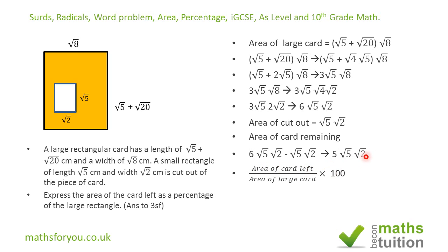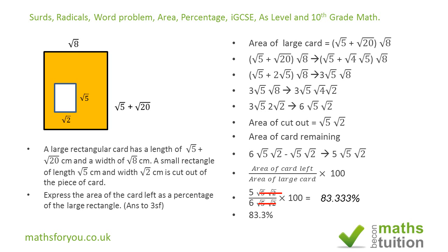To find the percentage of the area left, we calculate: (area left) ÷ (original area) × 100. That gives us (5√5√2) ÷ (6√5√2) × 100. The √5√2 terms cancel, leaving 5/6 × 100 = 83.333…%, which to 3 significant figures is 83.3%.